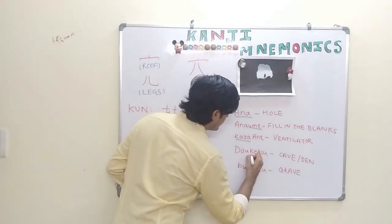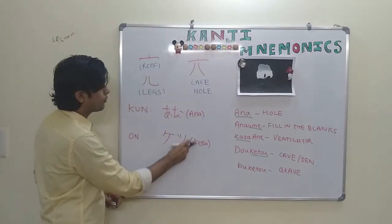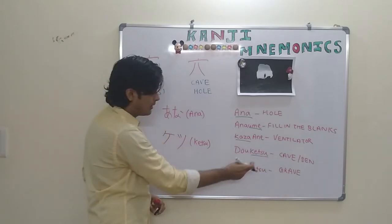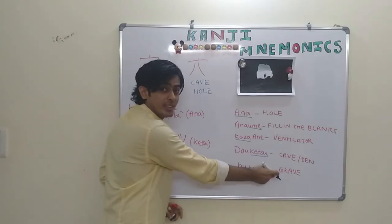Do ketsu. Now this is the on reading of this kanji. Do ketsu which itself means cave or den. And bo ketsu means grave.